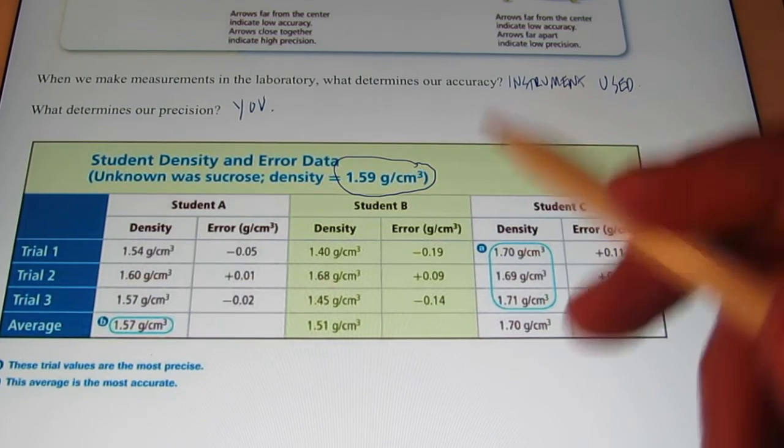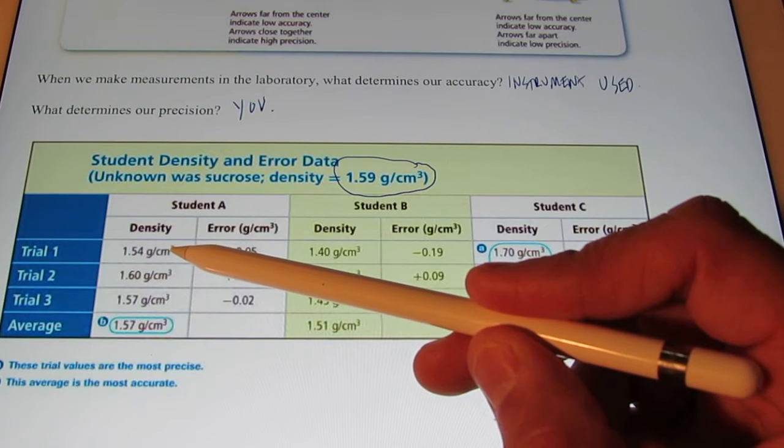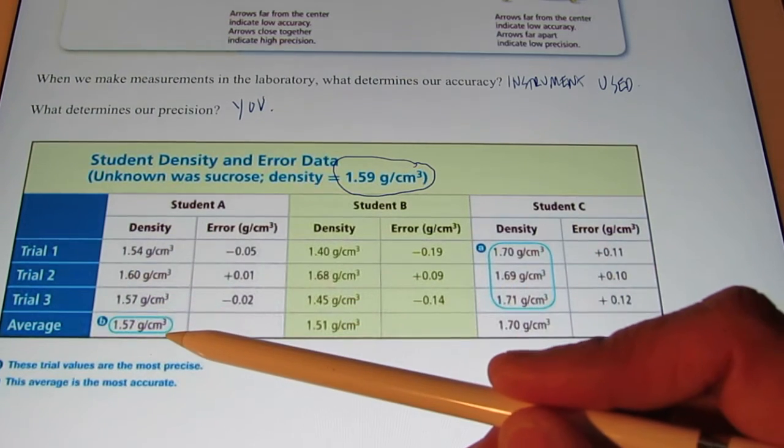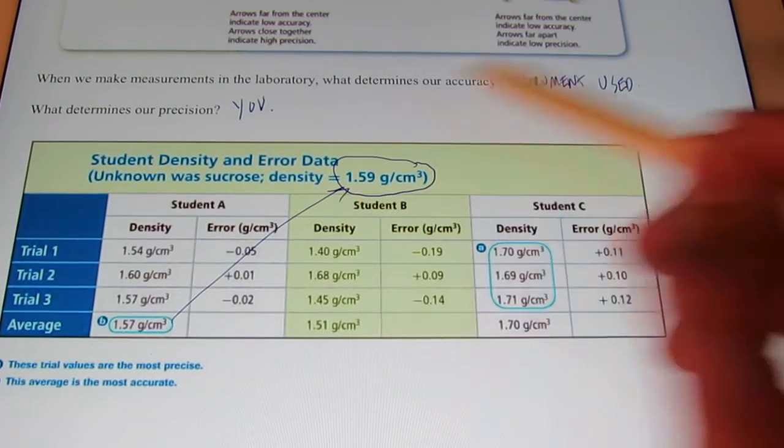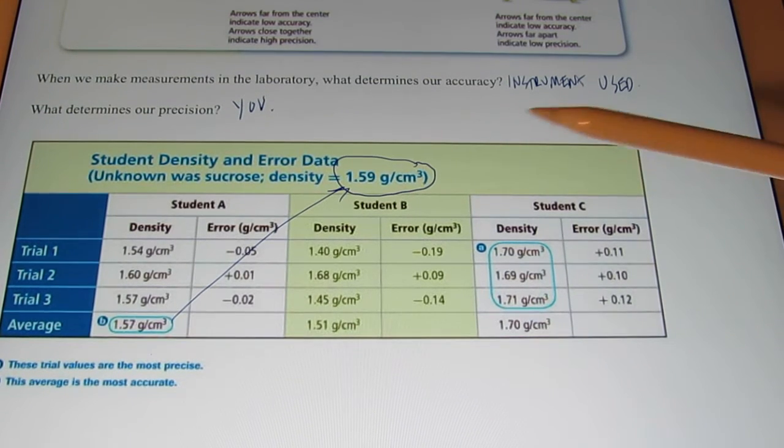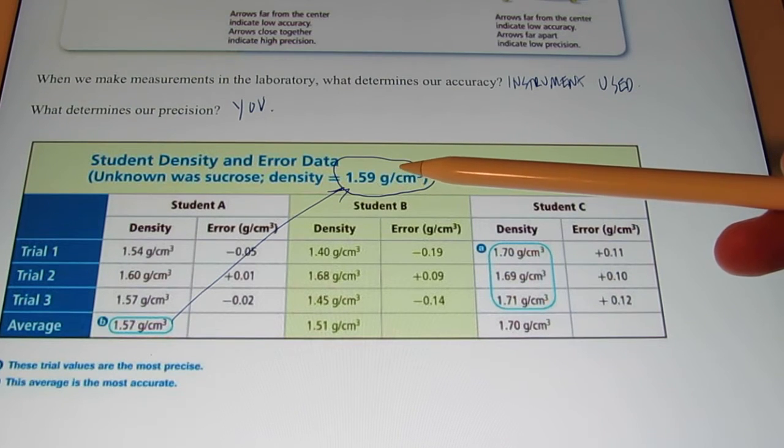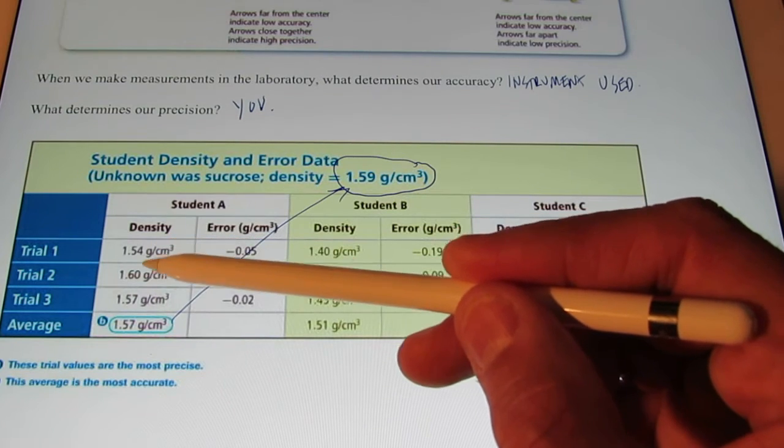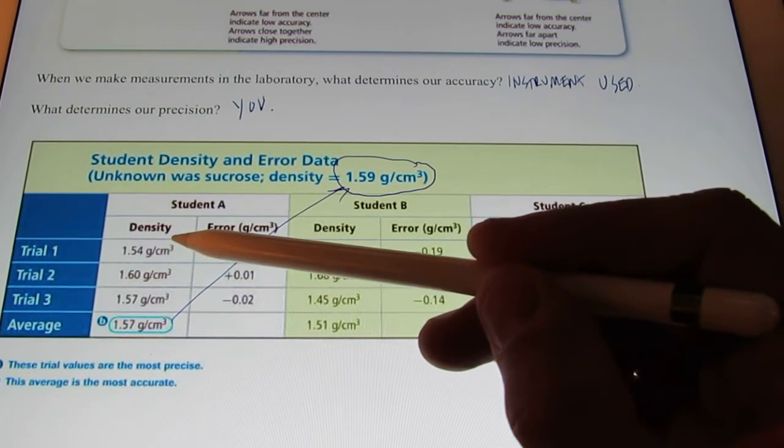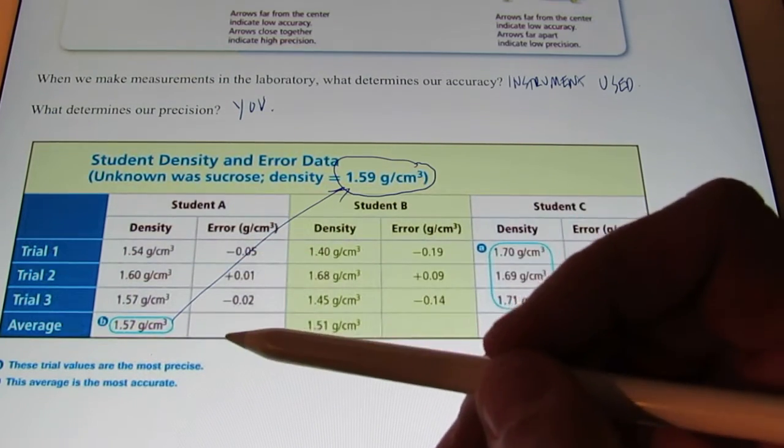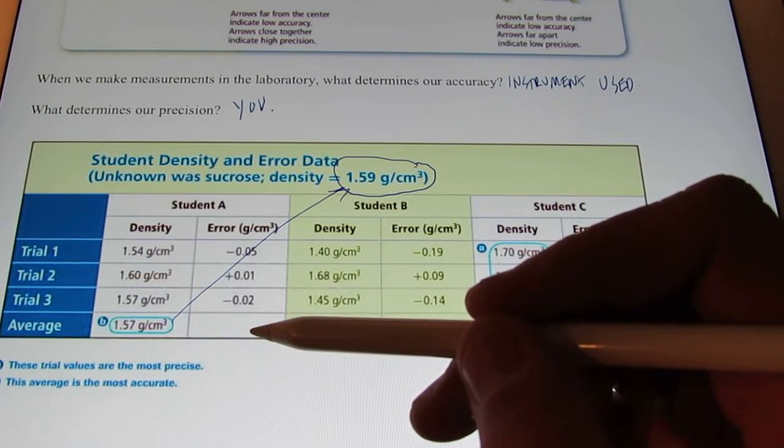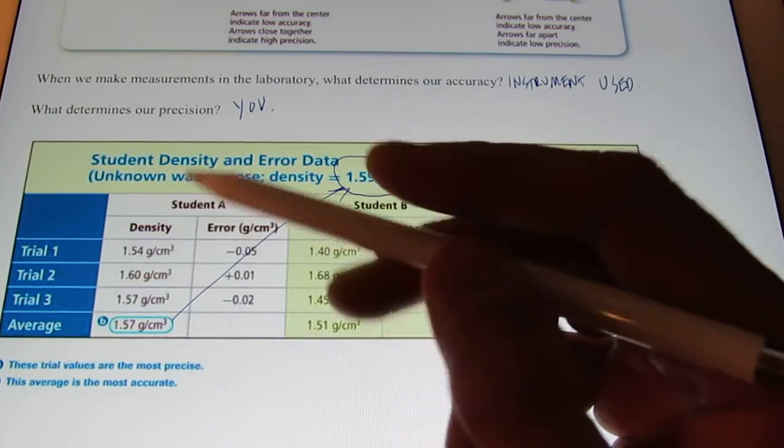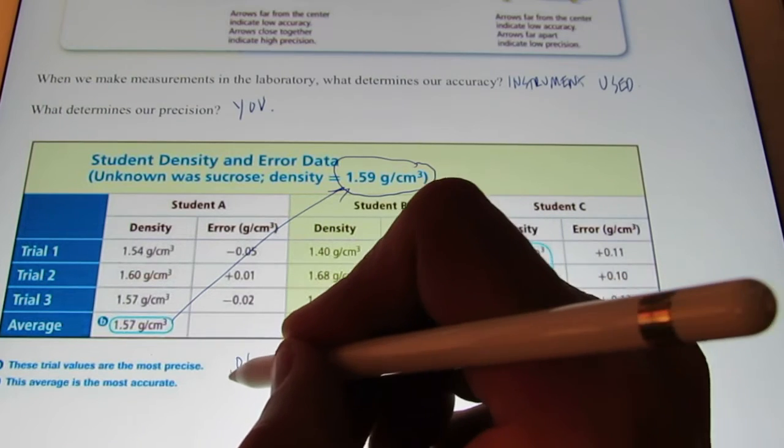Now, let's take a look and see what student A did. She performed the experiment three different times, and she got 1.54 grams per cubic centimeter, 1.60, and 1.57 grams per cubic centimeter. If we add these up and divide it by the number of trials, we get an average of 1.57. What do you think? Was that student accurate? Yeah, I would say so. They got pretty doggone close to the accepted value. Were they precise? Let's see. Precise means how close a series of measurements are to one another. So it looks like my high was 1.60. My low was 1.54. It looks like my range was 0.06.